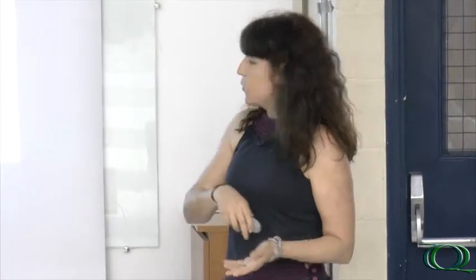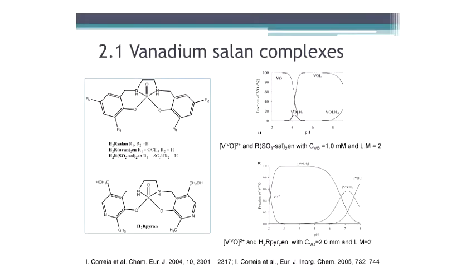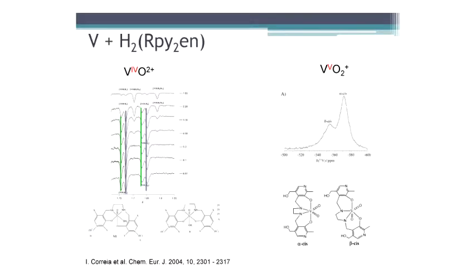Of course you cannot do only potentiometry. You also have to corroborate your results by other techniques. And for vanadium 4 we use EPR. For vanadium 5 we use vanadium NMR. And for this ligand with pyridoxal, we have kind of interesting results. Because in all the pH range, we always have two isomers, either as vanadium 4 or vanadium 5. So basically they are very similar except in their coordination modes.